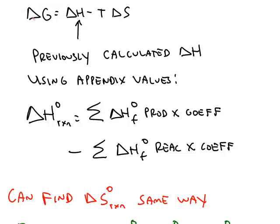This Gibbs formula, delta G is delta H minus T delta S, has some parts that you've already seen before.